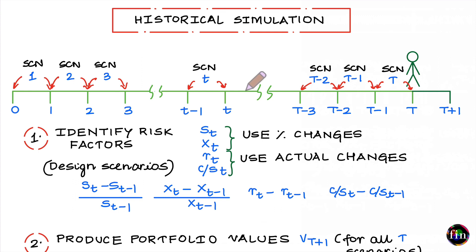Instead, the non-parametric approach will let the empirical data guide you with respect to the distribution of your random variable. We won't assume any distribution — we will let the empirical data guide us with respect to the distribution that we have to work with.